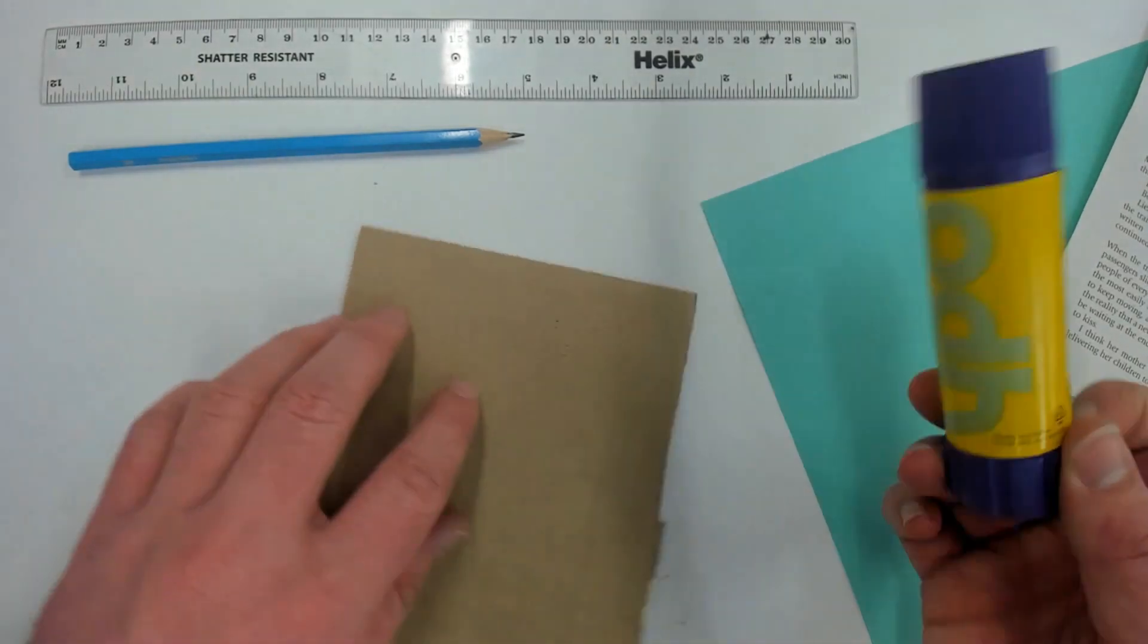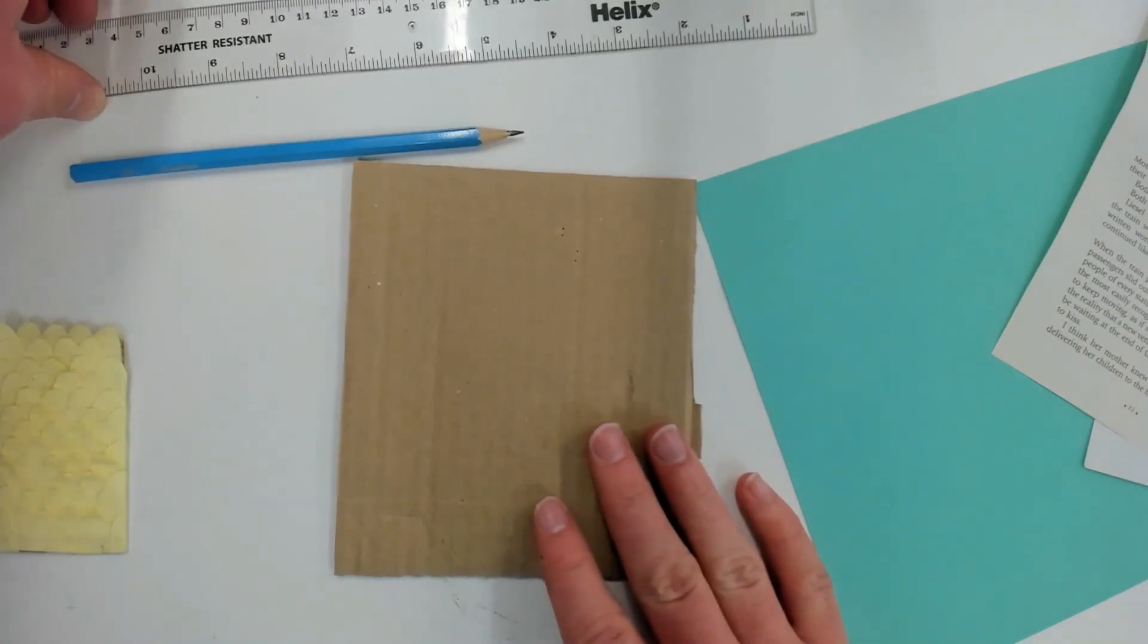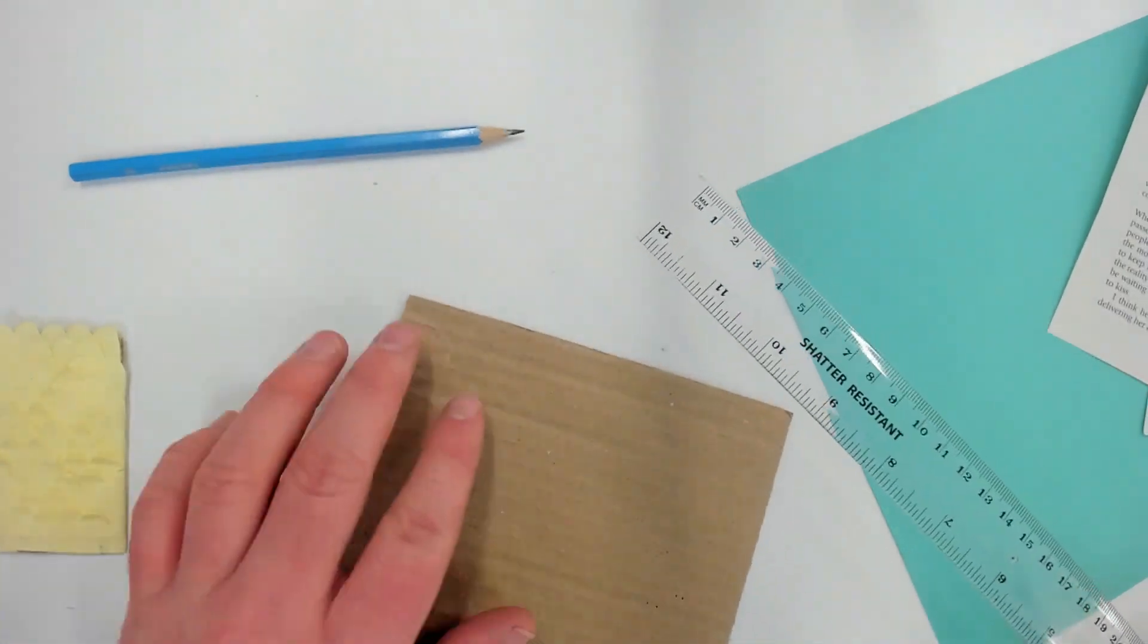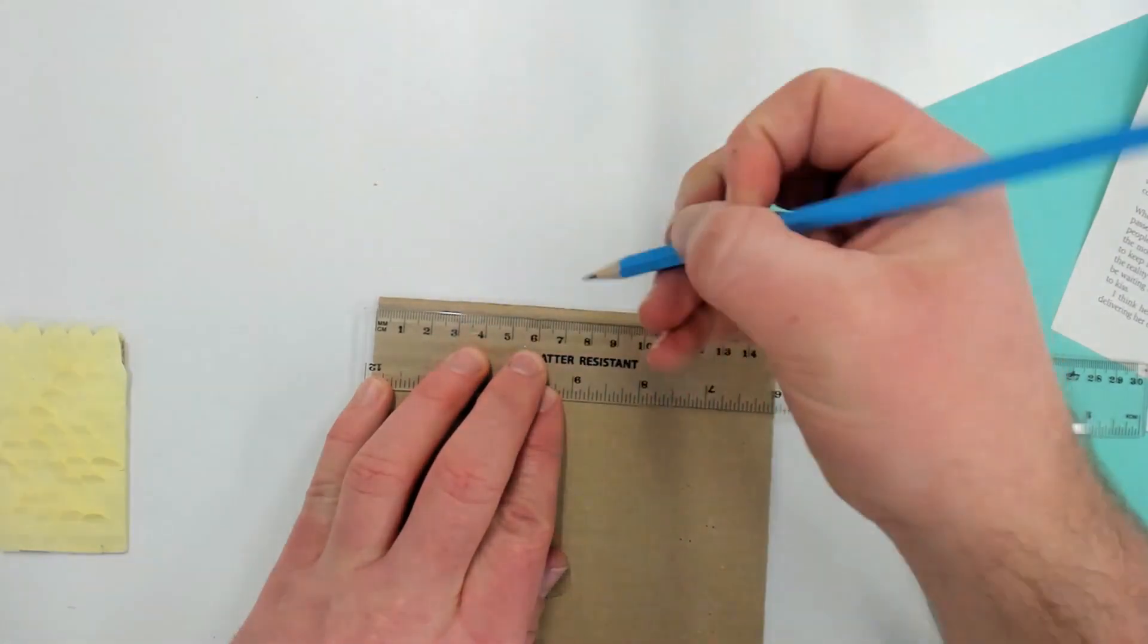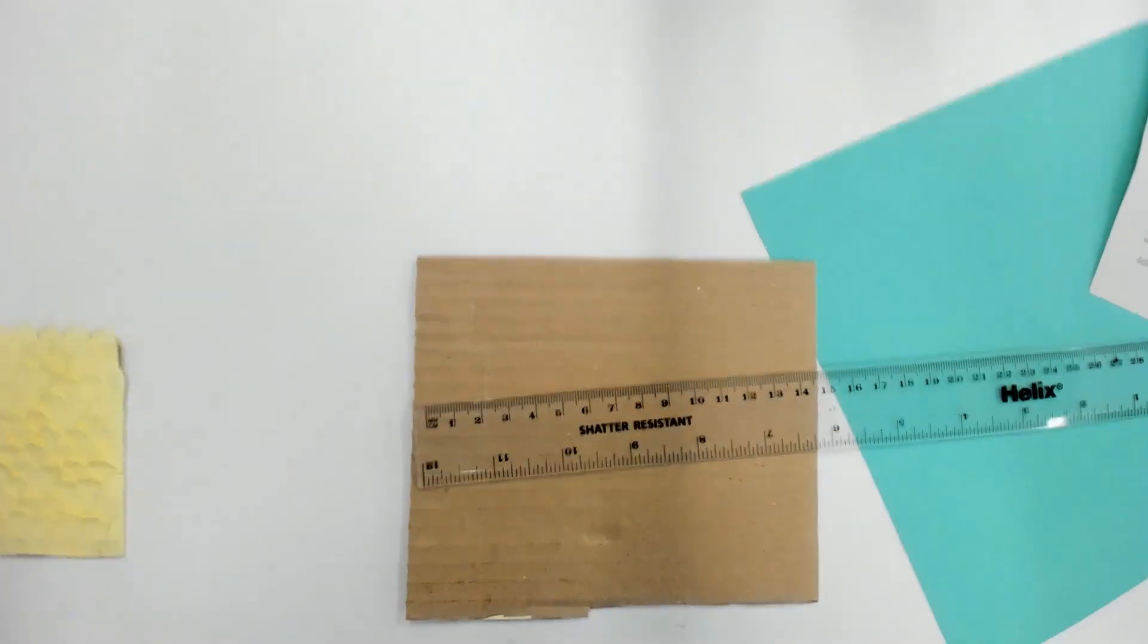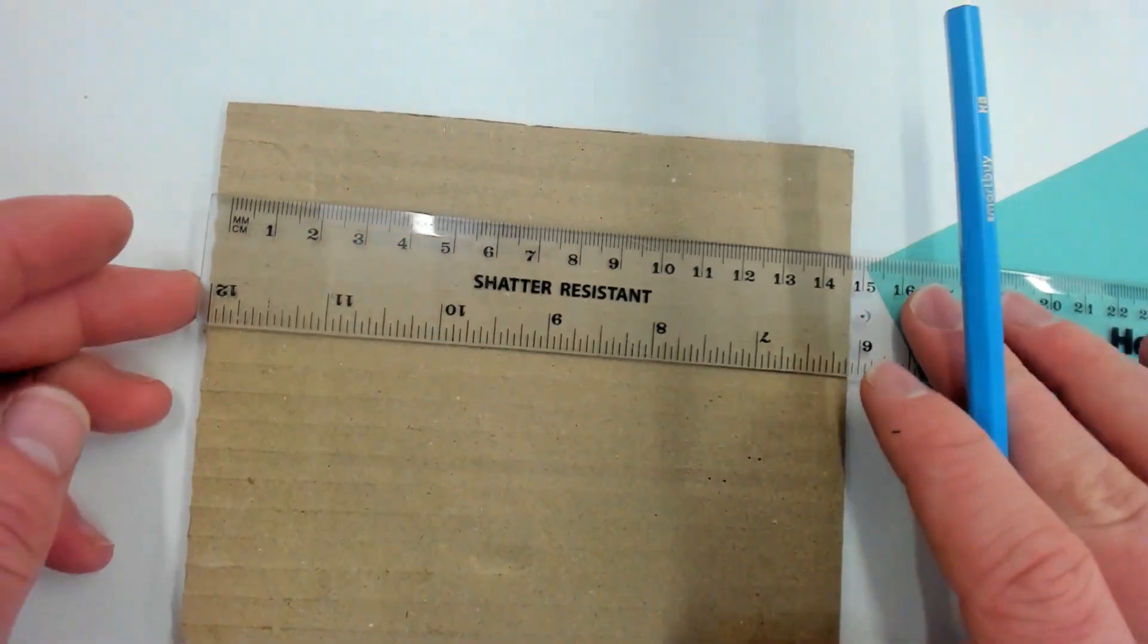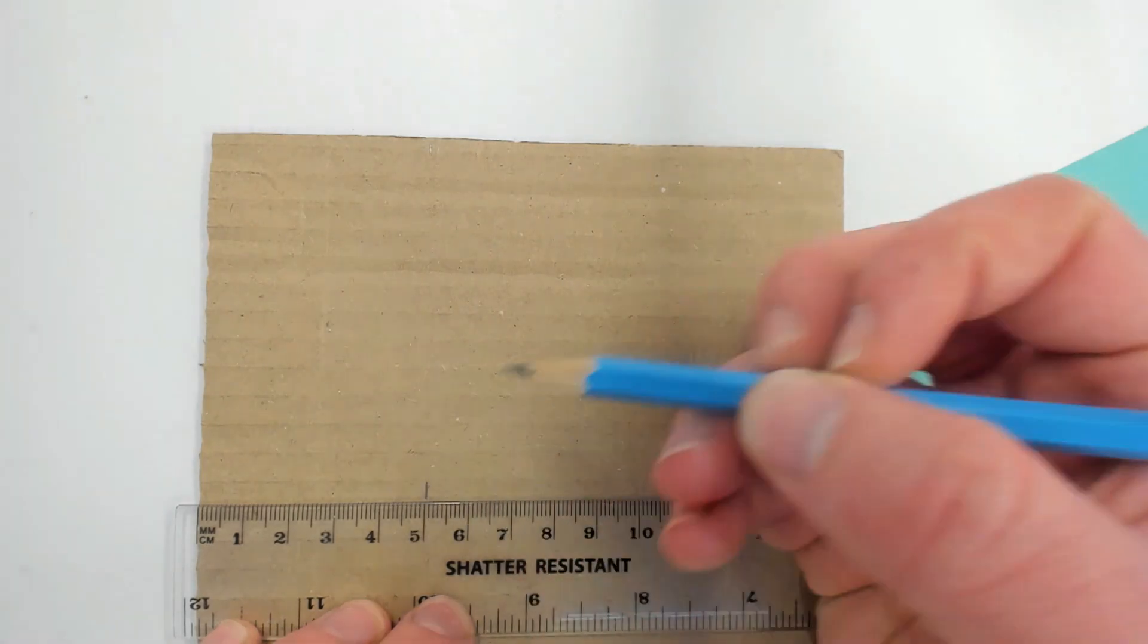First of all we're going to need something to stick our scales down to, our paper scales. So what we're going to do is make a small rectangle. I'm going to measure from a neat side. That side is pretty rough so I might use this one because it's quite square. So I'm going to measure a five centimeter line across the top. Let me zoom in a bit so you can see properly. That five centimeter mark is there. Bring it down and measure five centimeters near the bottom somewhere and join that line up.